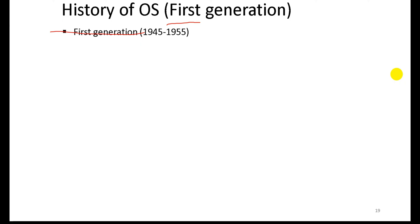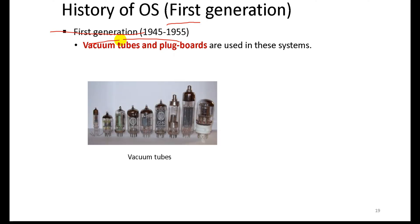The first generation of operating systems used vacuum tubes and plug boards in the system, as you can see here. This is what vacuum tubes and plug boards are.